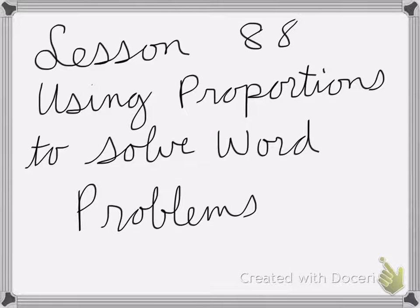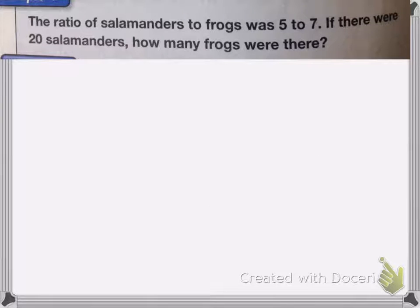All right, so lesson 88 is on using proportions to solve word problems. Here we have the ratio of salamanders to frogs was five to seven. If there were 20 salamanders, how many frogs were there?